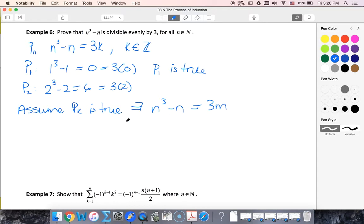I'm using a different variable because whatever this value is for the integer might not be this one. So I'm just going to say that m is an integer.